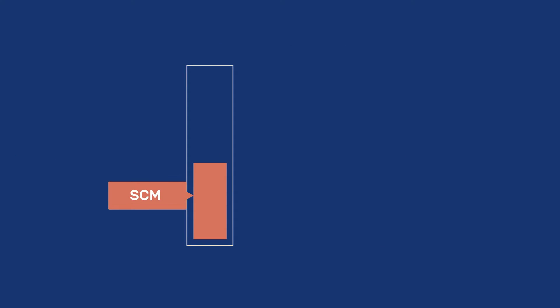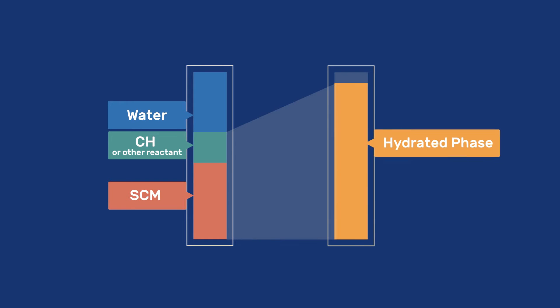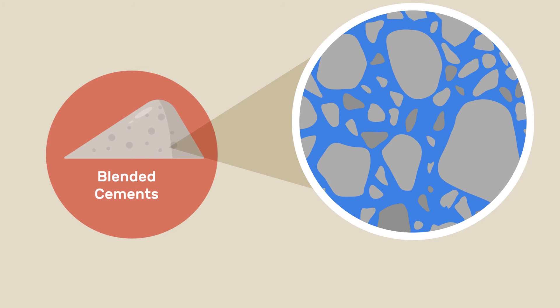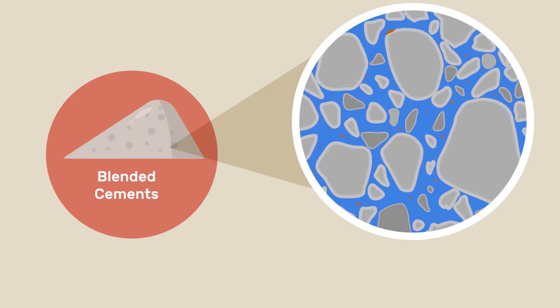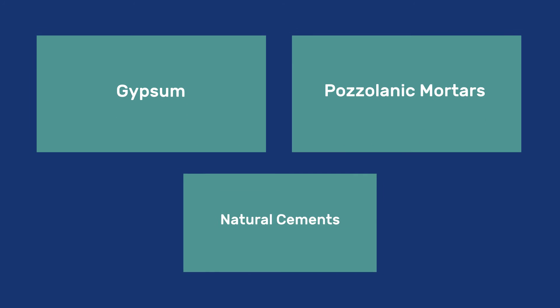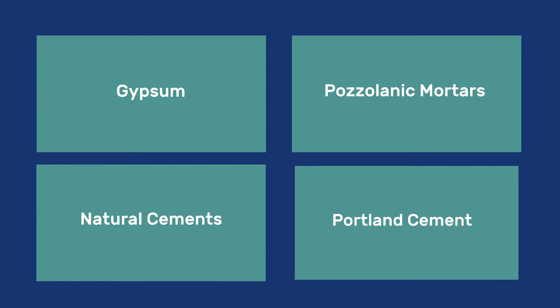As for other mineral binders, SCMs must, alone or with other compounds, react with water to produce hydrated phases occupying a larger volume than the original solids. This fills up the porosity, providing strength and durability to the hardened materials. Previous videos have illustrated this for gypsum, pozzolanic mortars, natural cements, and Portland cement.